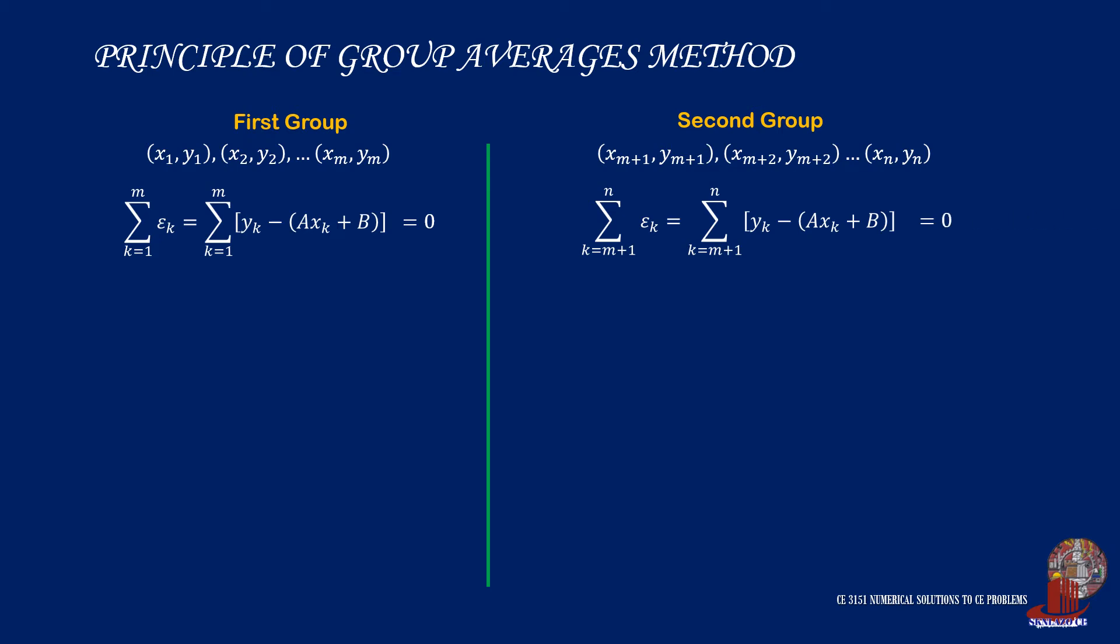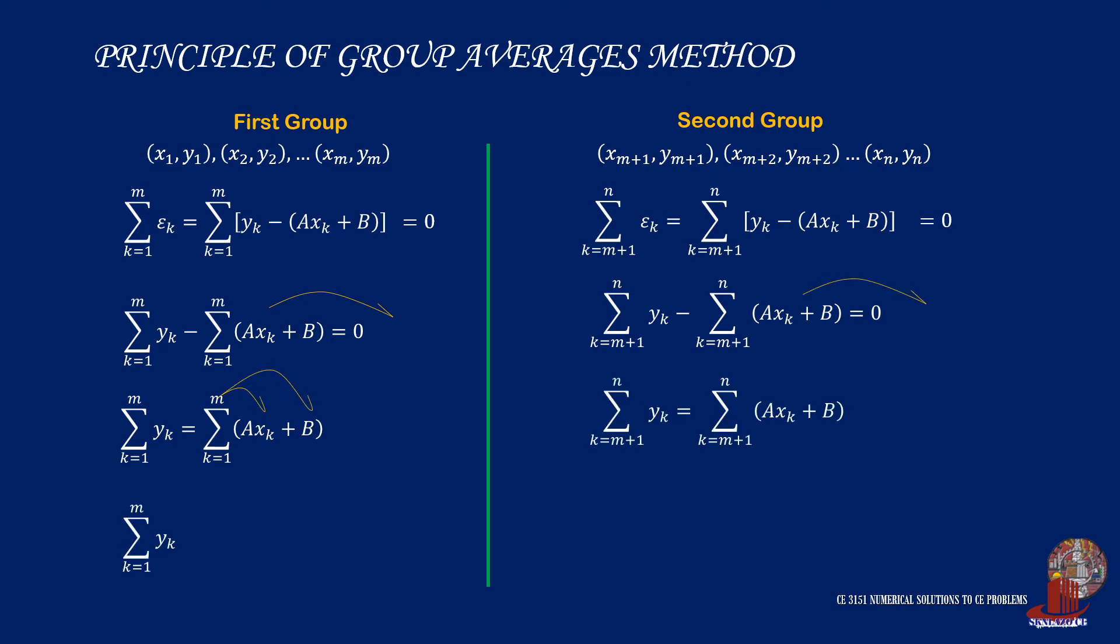Next, let us distribute the summation symbol sigma on the terms so we get the summation of y minus the summation of the quantity ax plus b is equal to zero. This is done on the second group as well. With zero on the right side, we can transpose the second term on the other side and then distribute the sigma sign on the individual terms on the right.